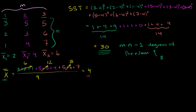In the last video, we were able to calculate the total sum of squares for these nine data points. These nine data points are grouped into three different groups, or more generally into m different groups. What I want to do in this video is to figure out how much of this total sum of squares is due to variation within each group versus variation between the actual groups. So first, let's figure out the total variation within the group — we'll call that the sum of squares within.